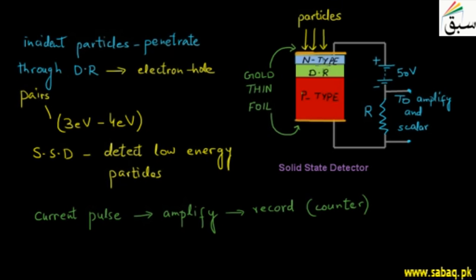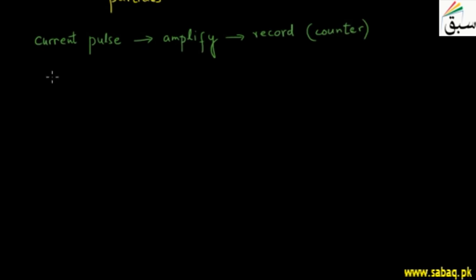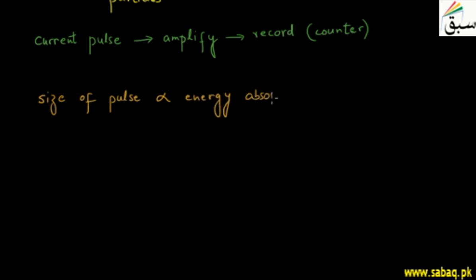When the current pulse comes to the resistance, it is amplified and recorded in the counter. The size of the pulse is directly proportional to the energy absorbed by the incident particle.